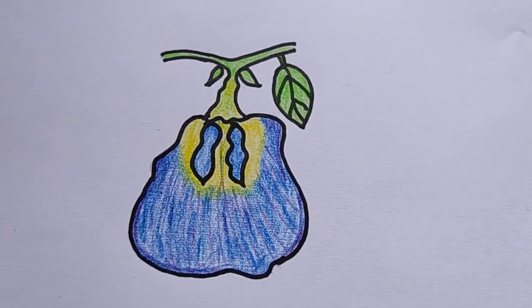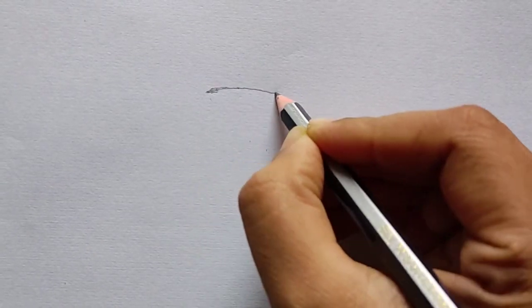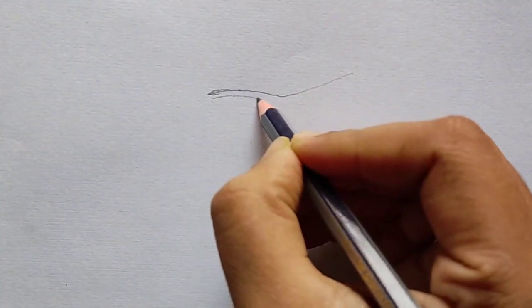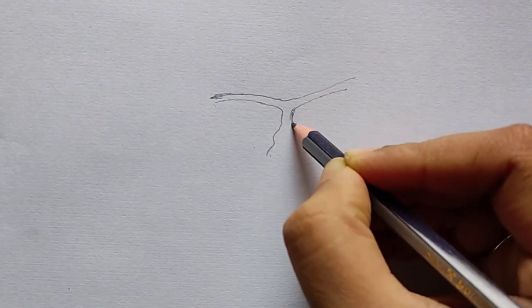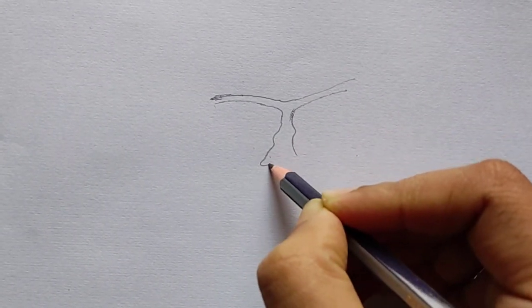Hello viewers, how are you? Hope you are fine, I am fine too. Today I am going to show you how to draw butterfly pea. Its common name is Aparajita, its botanical name is Clitoria ternatea.